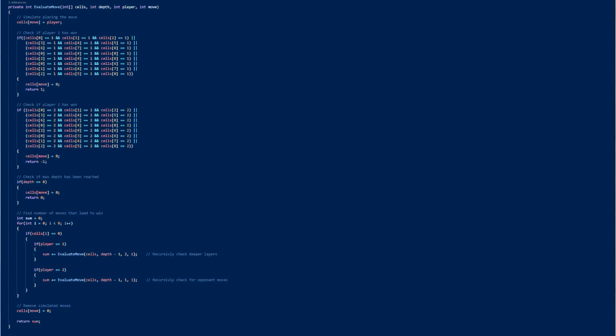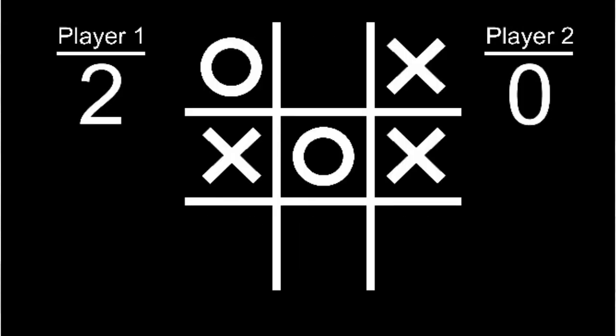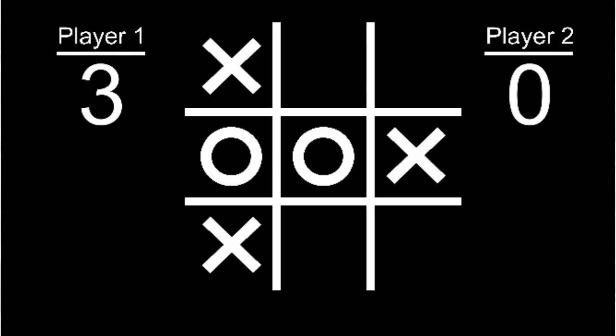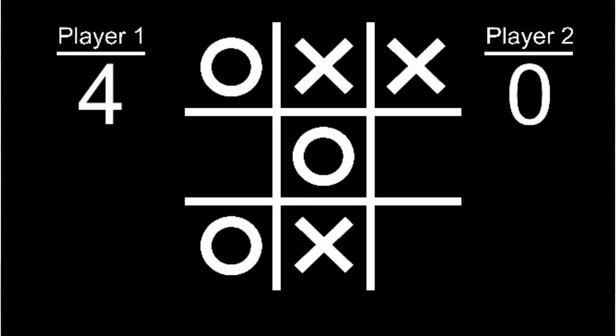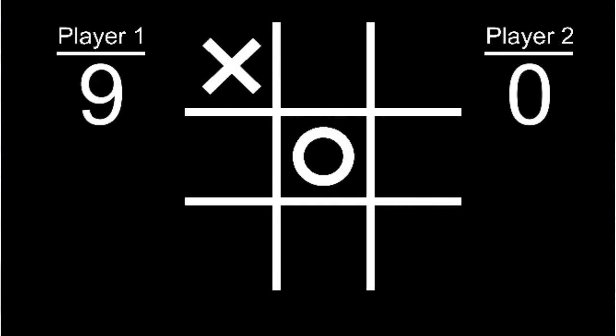And this is how it looks when it's implemented. Here the perfect bot is playing the circles against the random bot. And yeah, that was basically everything I had to say about this. I hope you found this at least somewhat interesting. Thank you for watching, and I hope to see you next time.